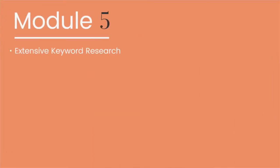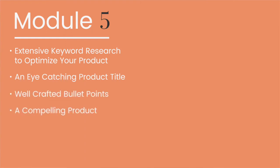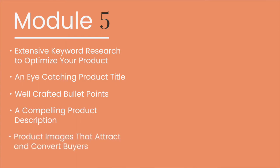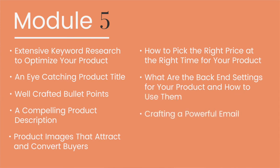In this lesson, we're going to cover in detail the eight components of the perfect product page, including extensive keyword research to optimize your product and make sure that your customers can find it, an eye-catching product title, well-crafted bullet points, a compelling product description, product images that attract and convert tons of Amazon buyers, how to pick the right price at the right time for your product, what are the critical back-end settings for your product and how to use them, and finally, crafting a powerful email follow-up sequence that will ensure your product builds rating fans and product reviews.